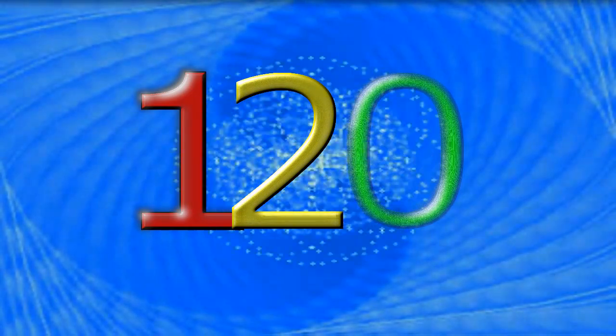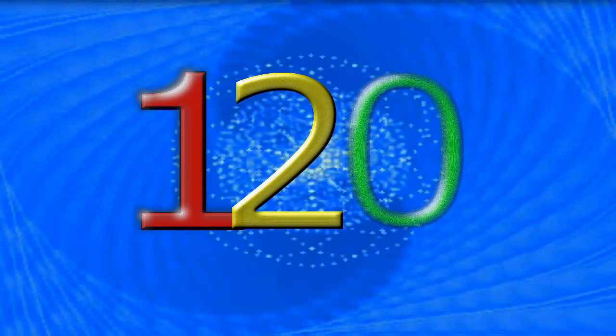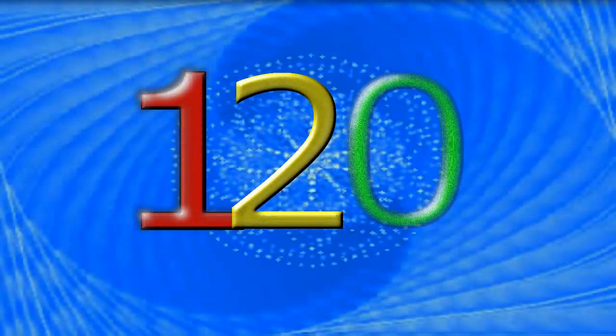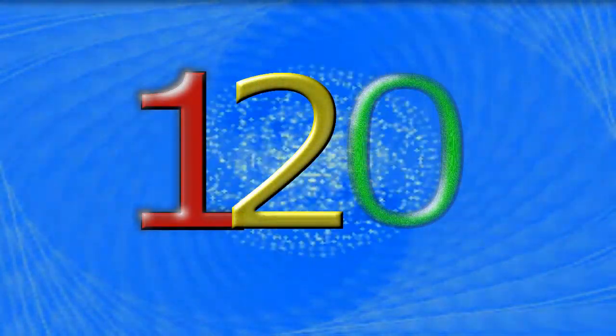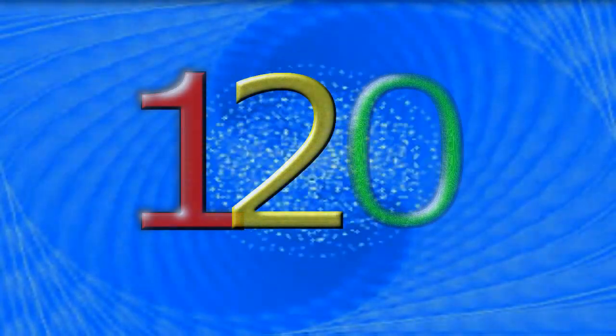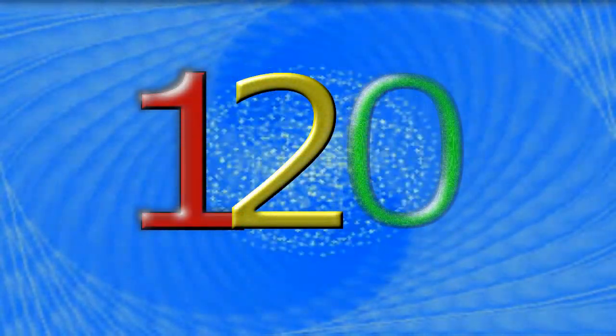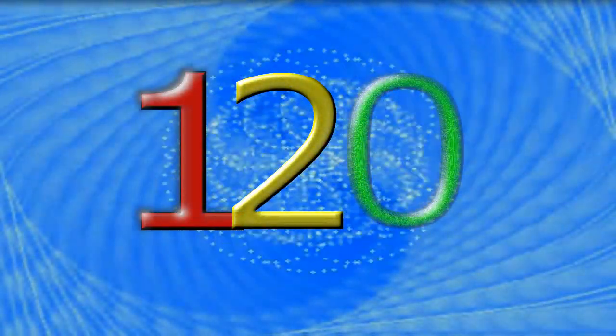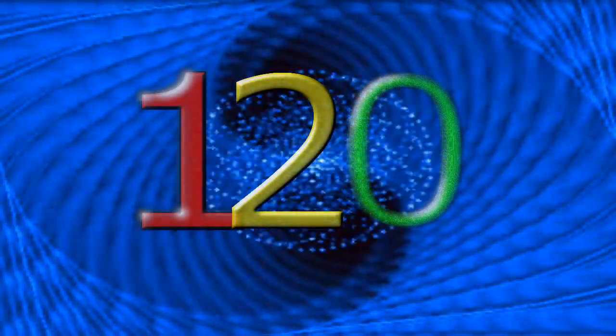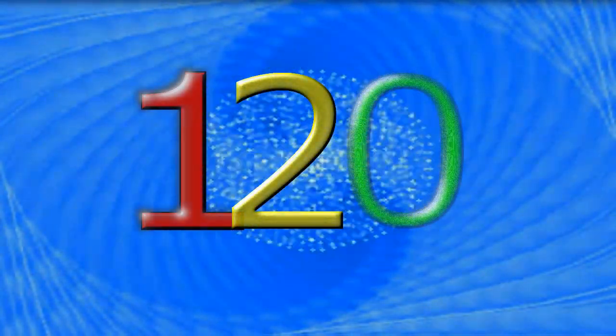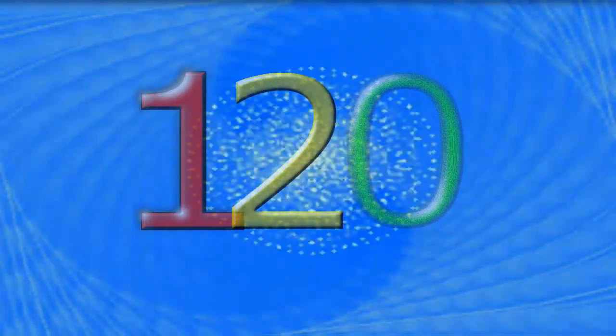The number 2 is the number of partnership and collaboration. The vibration of the number 2 resonates with an energy of cooperation, diplomacy, and the ability to adapt to circumstances. The number 0 brings an amplifying influence, strengthening the vibrational energy of the other numbers with which it appears. Number 0 is closely associated with divine source and the energy of eternity. When these three numbers combine in angel number 120, it is a calling from your angels to look on a creative partnership or business opportunity with optimism and a positive mind.